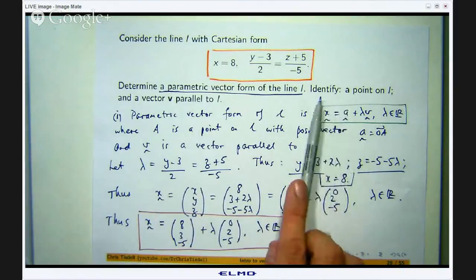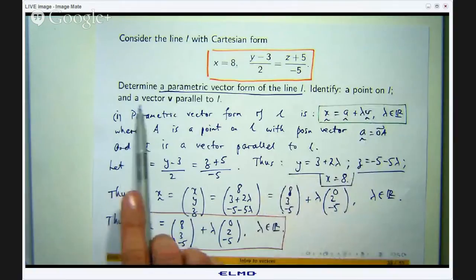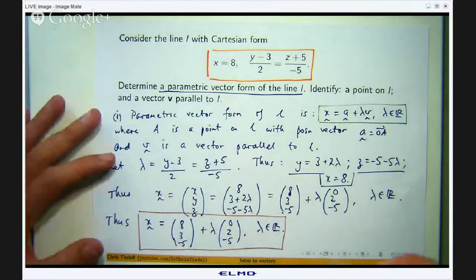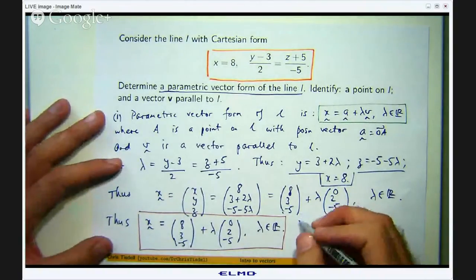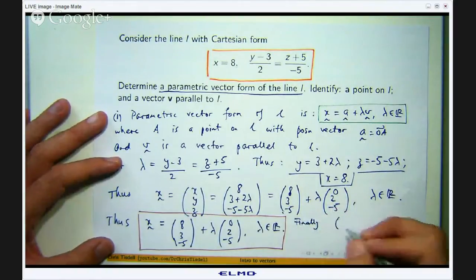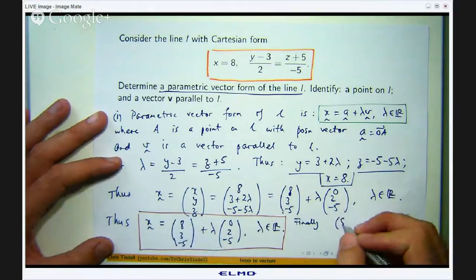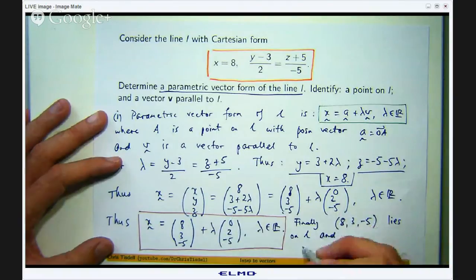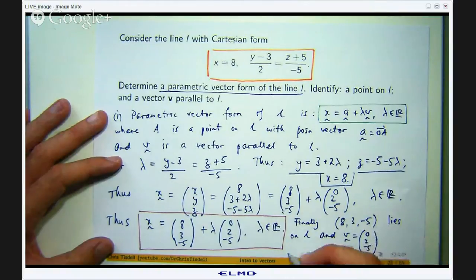Now the second part of this question asks us to identify a point on L and a vector v parallel to L. We can actually work that out from here. We write this as a point. So this point lies on L and this vector is parallel to L.